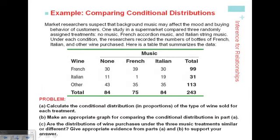For example, here is a store that sells wine. It's trying to figure out: can I affect which wine gets sold based on which music I play? If I play French music, do I sell more French wine? If I play Italian music, do I sell more Italian wine? Does this categorical variable — the music played — have an effect on this categorical variable — the wine that gets sold?